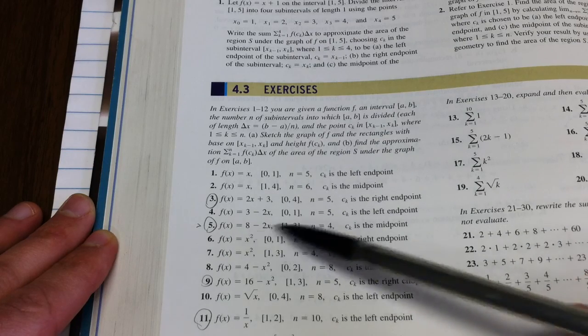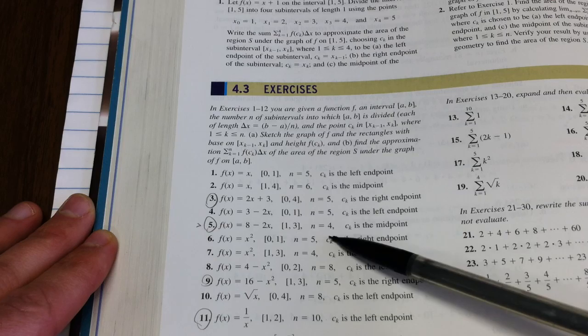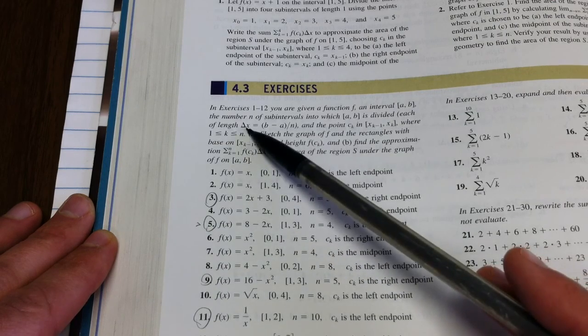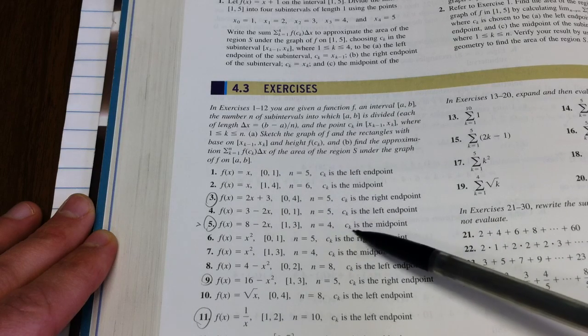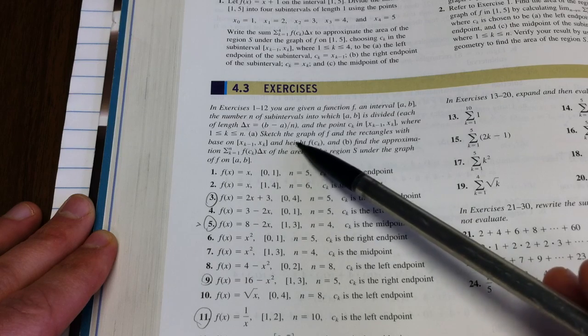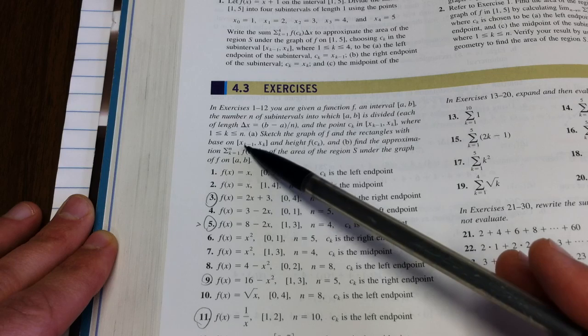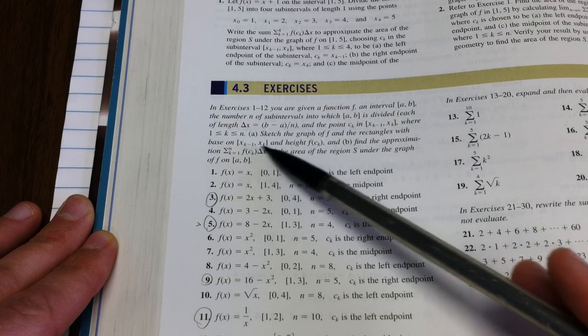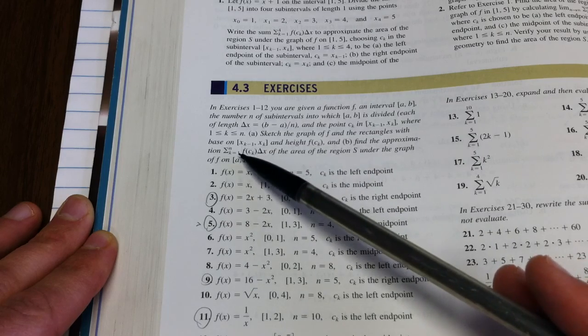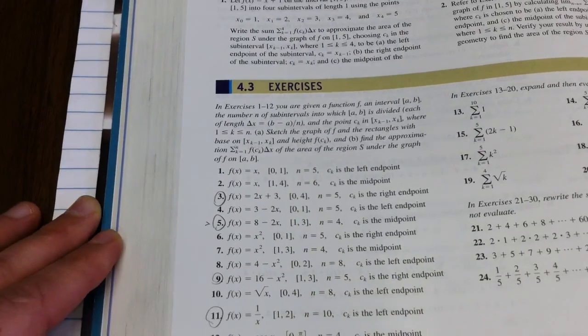You're given a function, an interval, a number of sub-intervals that divide a, b into equal pieces of length delta x, and the points that you're supposed to approximate the height at each point. So we're supposed to sketch the graph of f and the rectangles with the base and height listed, and then we're supposed to find the approximation of the area under the curve.